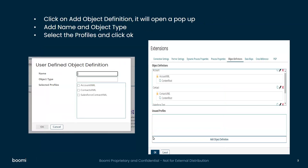This will open a pop-up where we need to provide a name and object type. Once we provide these two details, select a profile which you want to add in this particular object type. Once the profiles are selected, click OK. This will add the profiles to the object definitions. You can do the same for the remaining profiles also.